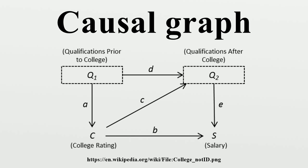In Model 1, one variable represents the individual's qualifications prior to college, another represents qualifications after college, a variable C contains attributes representing the quality of the college attended, and S represents the individual's salary. Figure 1 is a causal graph representing this model specification. Each variable has a corresponding node or vertex in the graph, and for each equation, arrows are drawn from the independent variables to the dependent variables, reflecting the direction of causation.